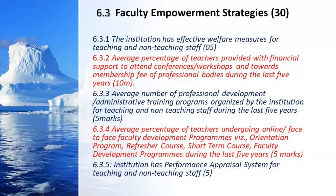We start with 6.3, Faculty Empowerment Strategies, in Criterion 6. When we talk of faculty empowerment strategies, it primarily focuses on the faculty of the organization — how does the organization take care of the faculty to see to it that it improves in a better way. This criterion 6.3 plays a very big weightage.